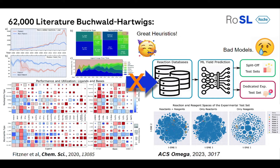It is very important, once you open that door and start generating that much data, to generate it in a way where you can make use of it — not only to design your next round of experiments, but to use that data for the next Buchwald-Hartwig that comes in, for prediction later down the road.